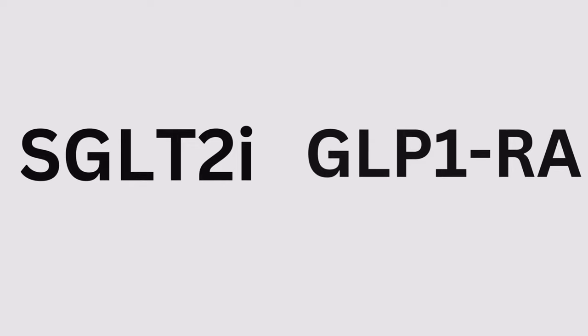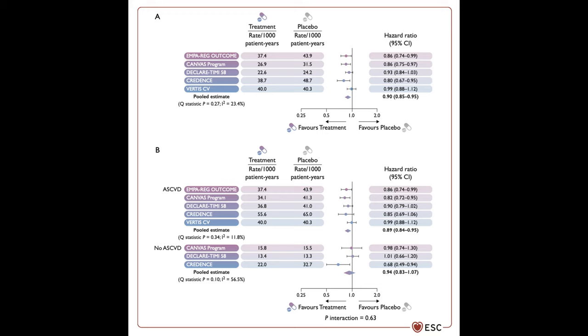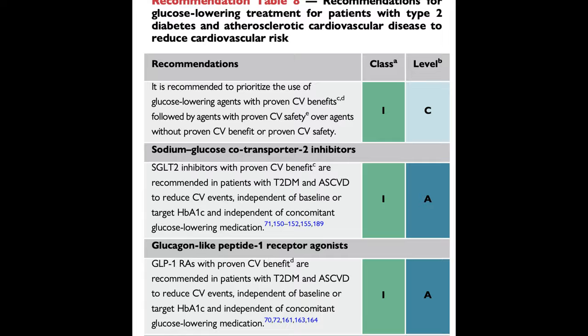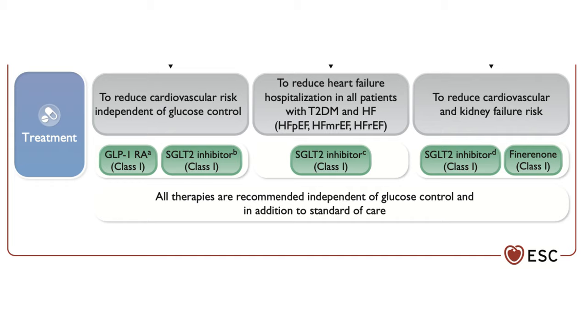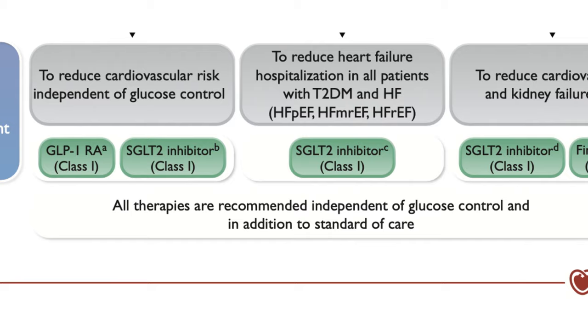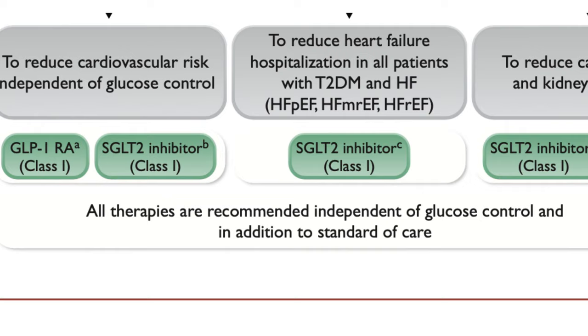SGLT2 inhibitors and GLP-1 receptor agonists have overwhelming evidence of cardiovascular protection. Six trials with SGLT2 inhibitors and five trials with GLP-1 receptor agonists showed cardiovascular protection. These two classes are considered to reduce cardiovascular risk regardless of glucose control considerations and irrespective of background therapy — to be used in patients with type 2 diabetes and established cardiovascular disease just like statins, antithrombotic therapy, and renin-angiotensin system blockers.